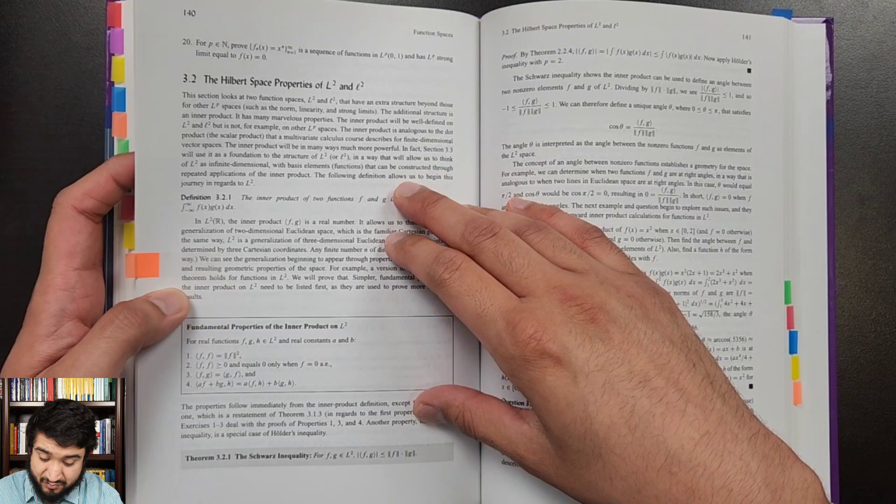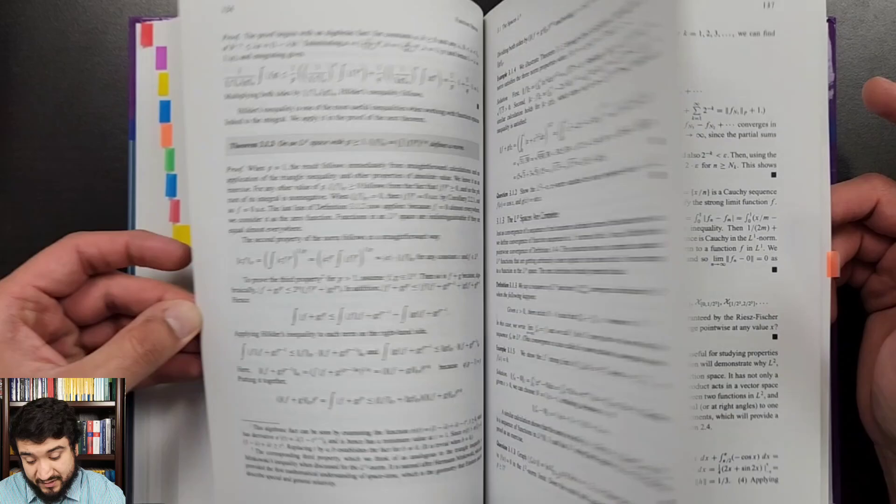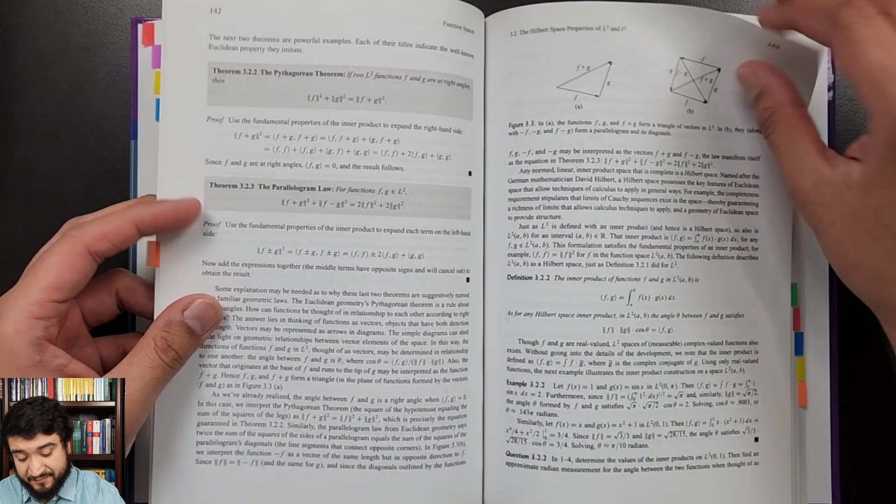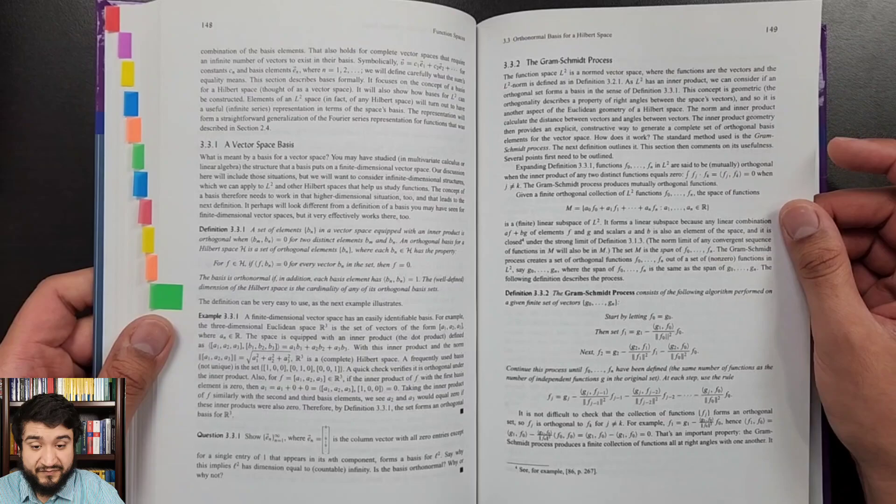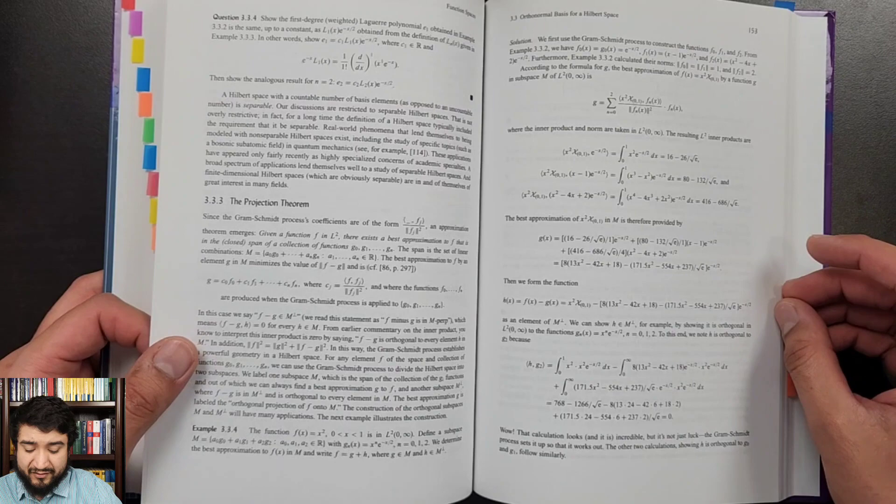Here we go, Hilbert spaces, properties of L2 and L2 spaces. So yeah, the notions from linear algebra are introduced where needed, essentially. Here we go, orthonormal basis for Hilbert space. Here we've got basis for finite dimensional vector spaces. So yeah, he does a very good job here of giving you the notions from whatever field it might be to understand the content.